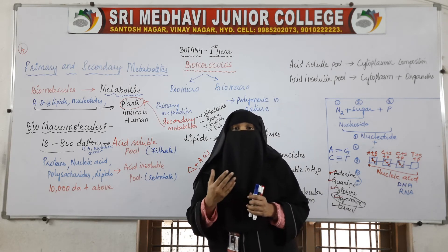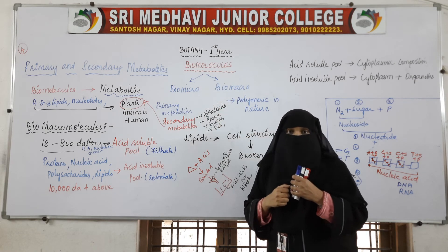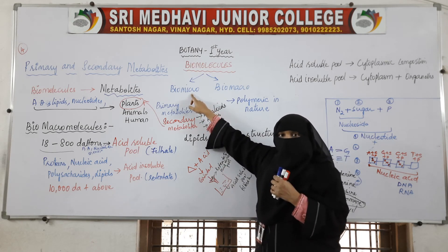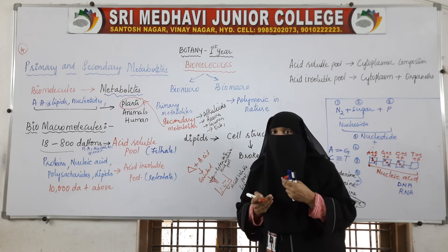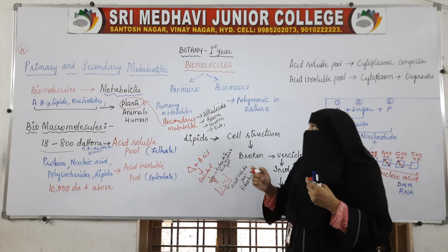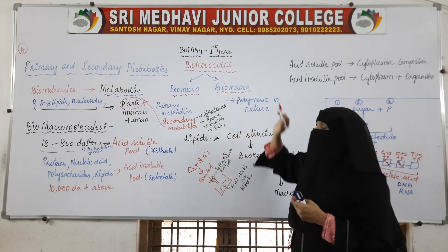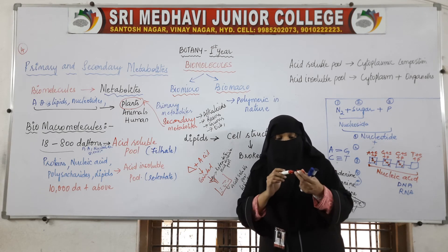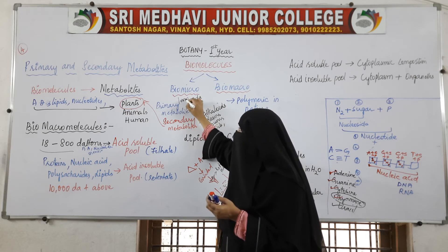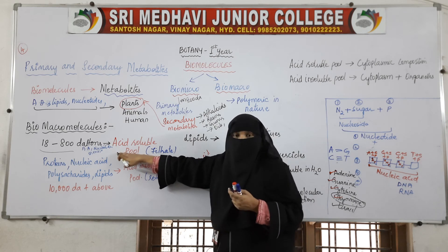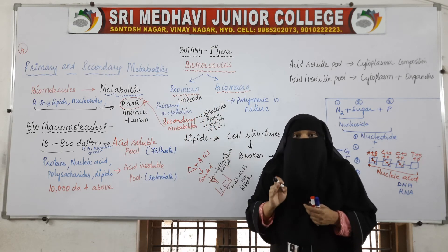Based on molecular weight, biomolecules are classified into two types: biomicromolecules and biomacromolecules. Biomicromolecules have weight less than 800 daltons, while biomacromolecules have molecular weight more than 10,000 daltons.